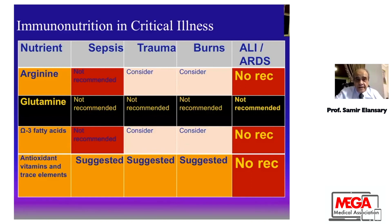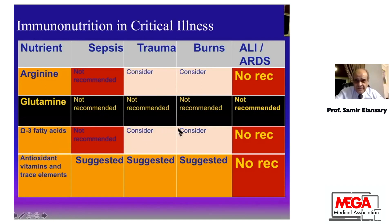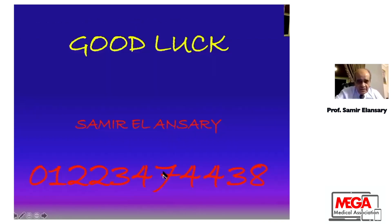In summary for immune nutrition in critical illness: glutamine is not recommended at all. Omega-3 and arginine may be considered in trauma and burns. Omega-3 fatty acids can be considered in burns, trauma, and ARDS. Antioxidant vitamins and trace elements may be considered in sepsis, trauma, and burns.